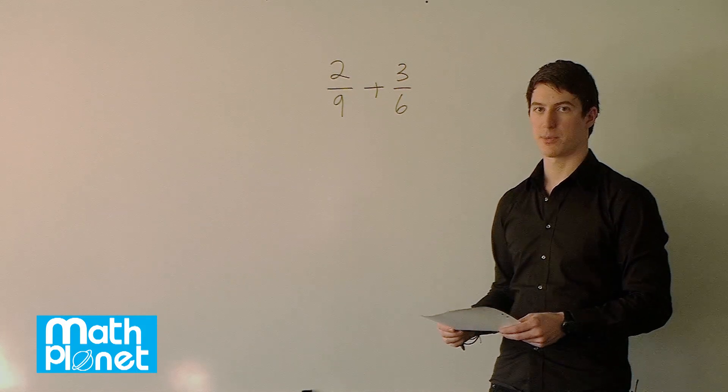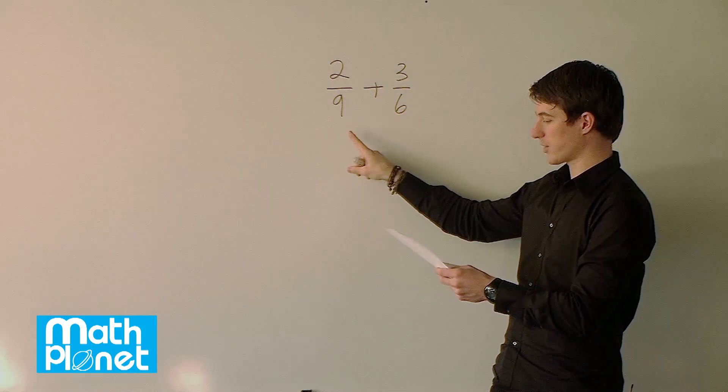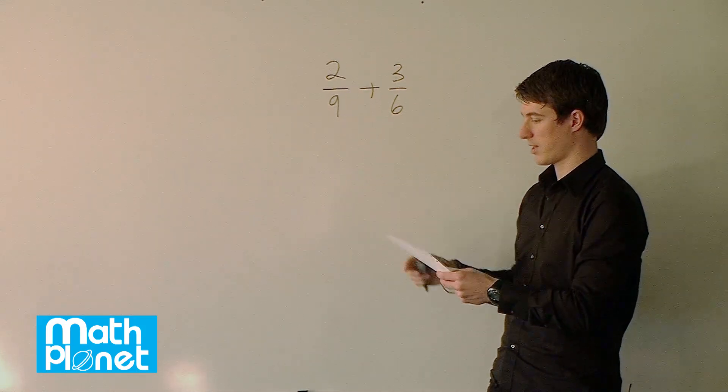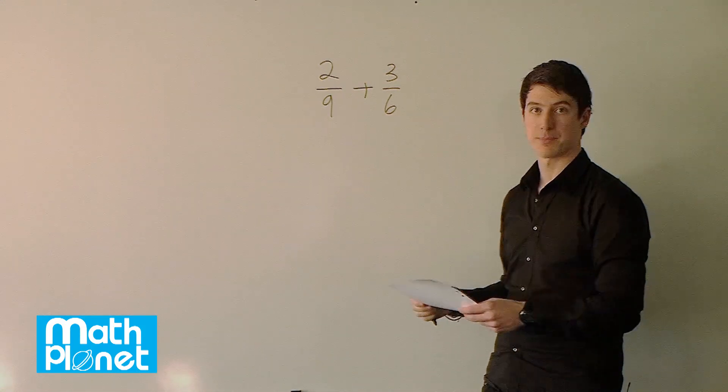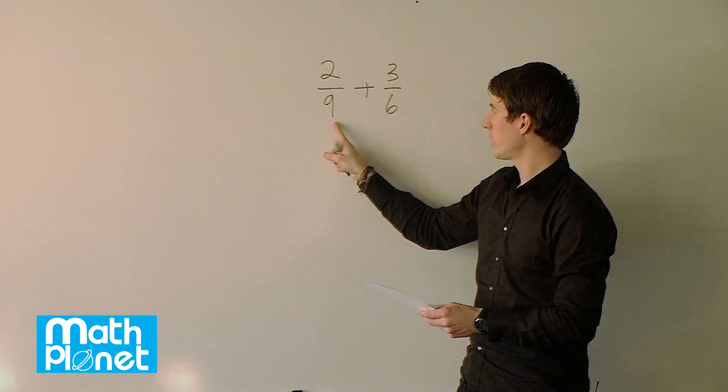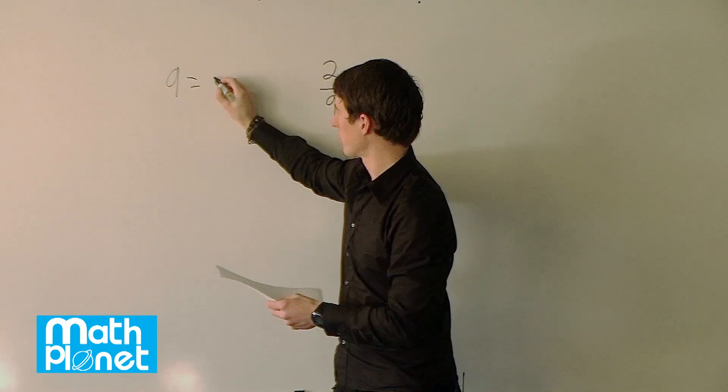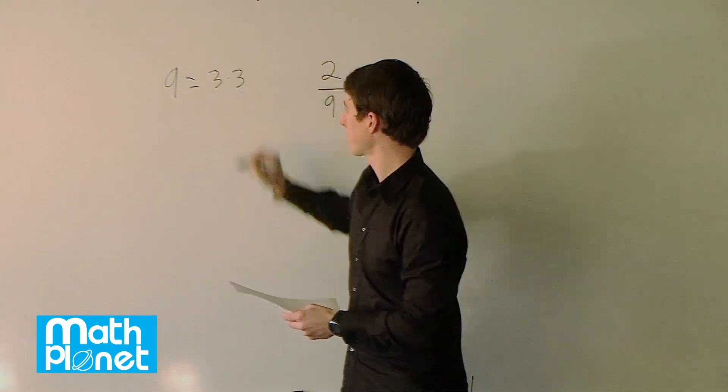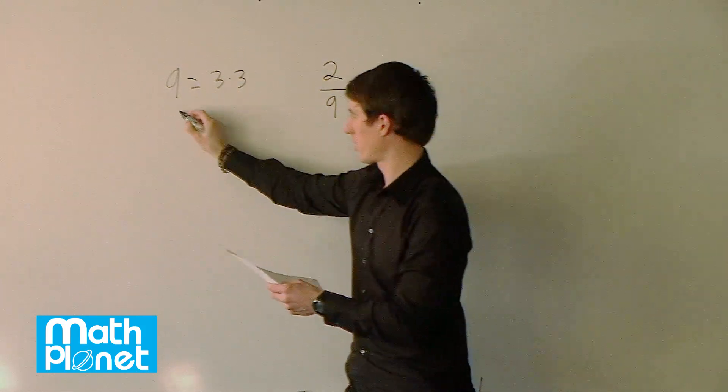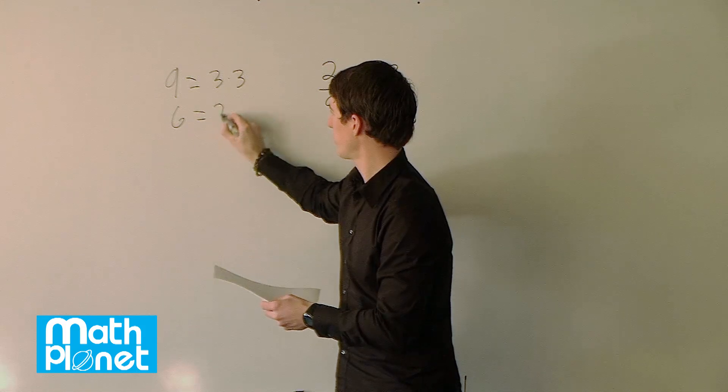So to find out what the lowest common denominator is we need to factorize the 9 and the 6 and then see what that factor is going to be. So if we factorize a 9 we can say the factors of 9 are 3 and 3 and the factors of 6 are 2 and 3.